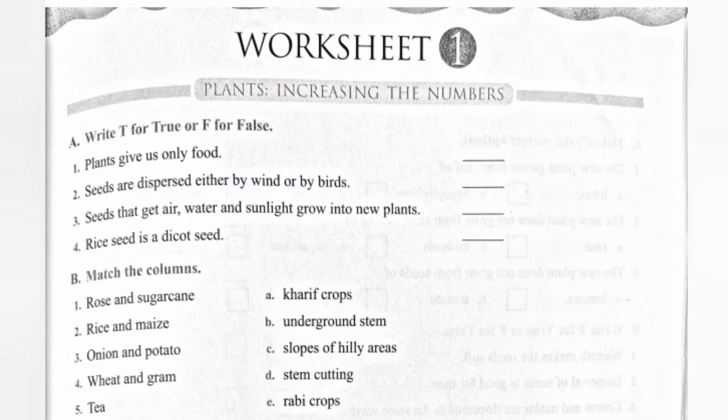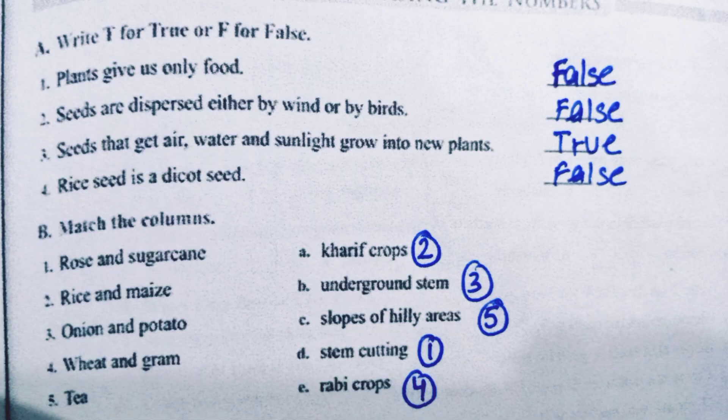So let's start the video. Part A is: write T for True or F for False. First one is: plants give us only food. Plants give us not only food — they give us vegetables, fruits, cereals, pulses, tea, coffee, sugar, oil, and many more things. So that is False.